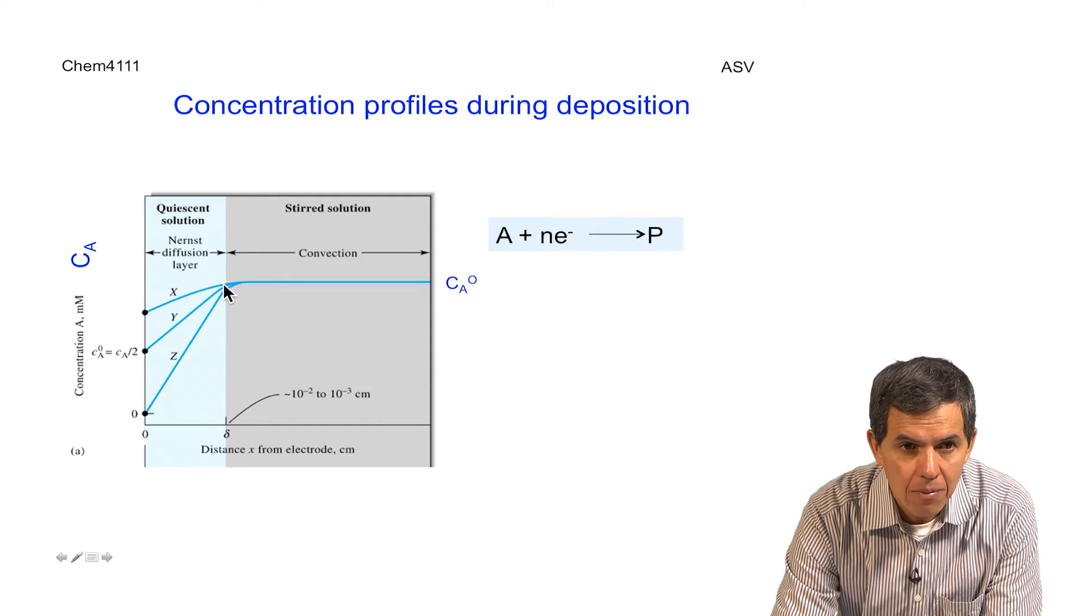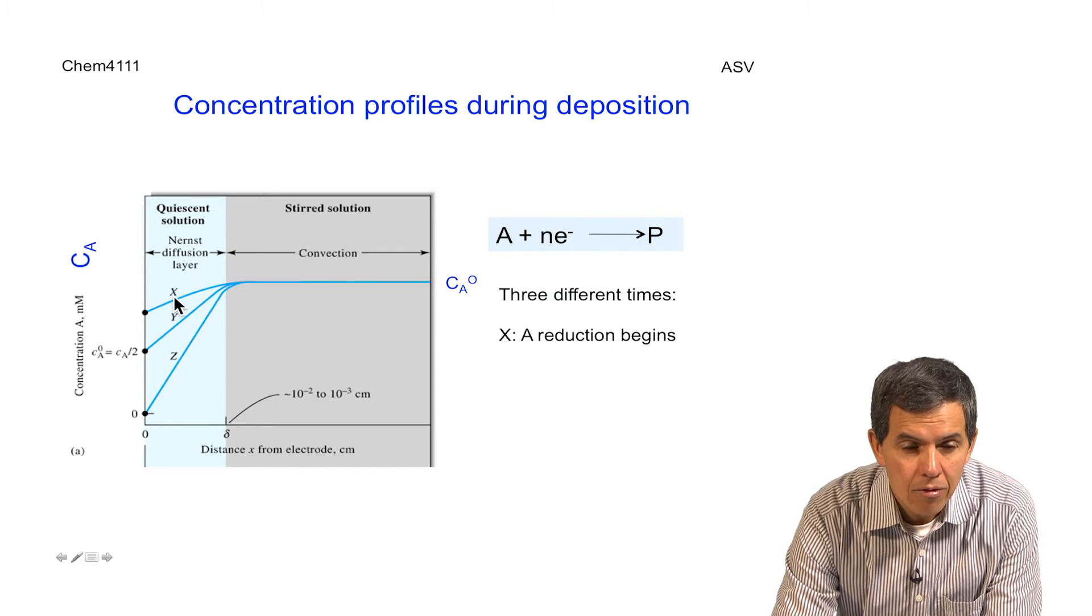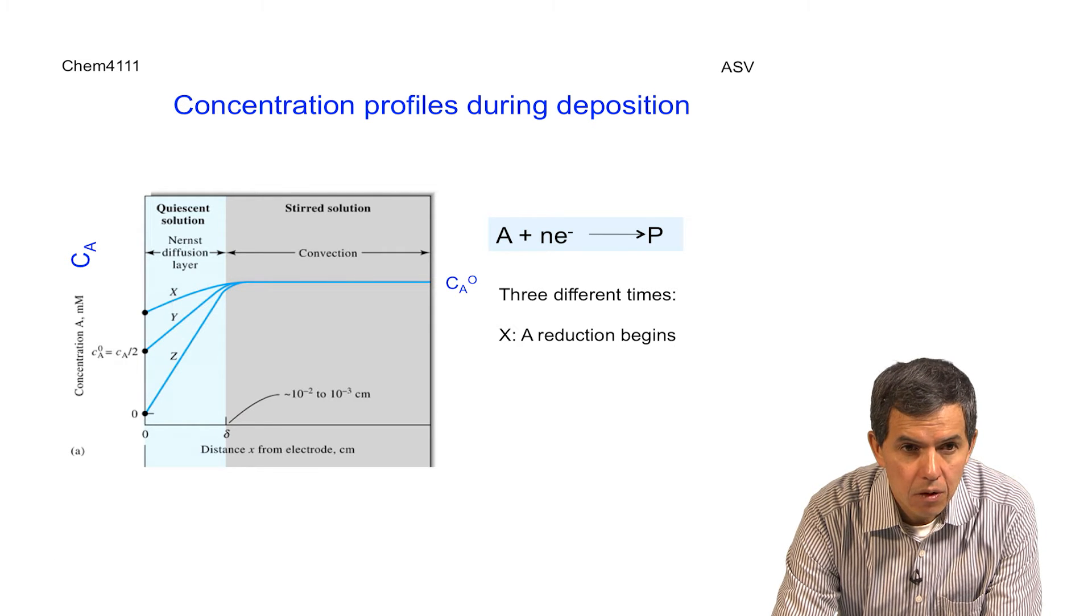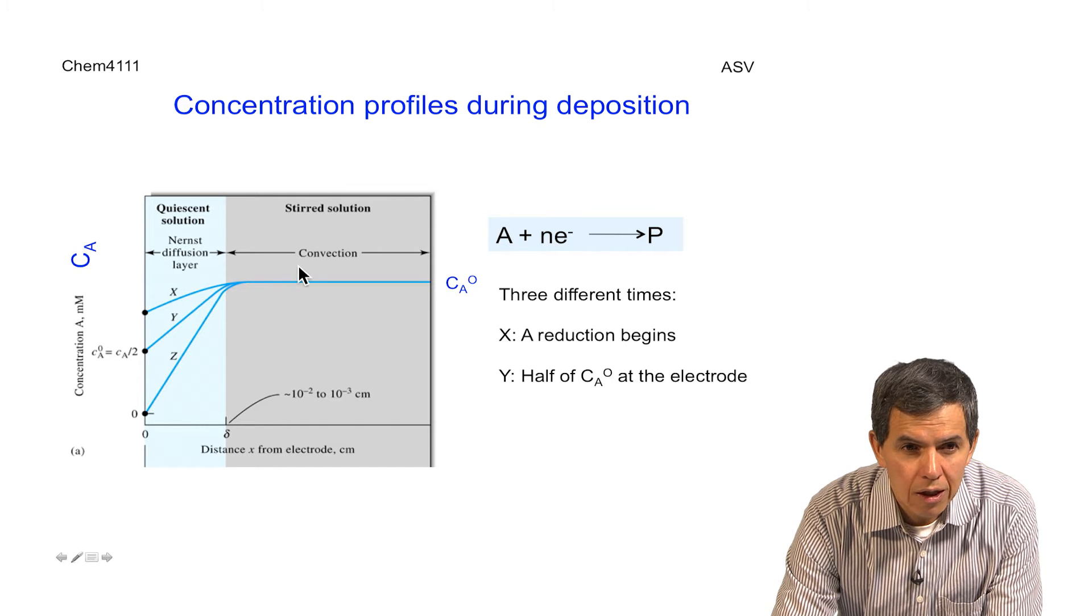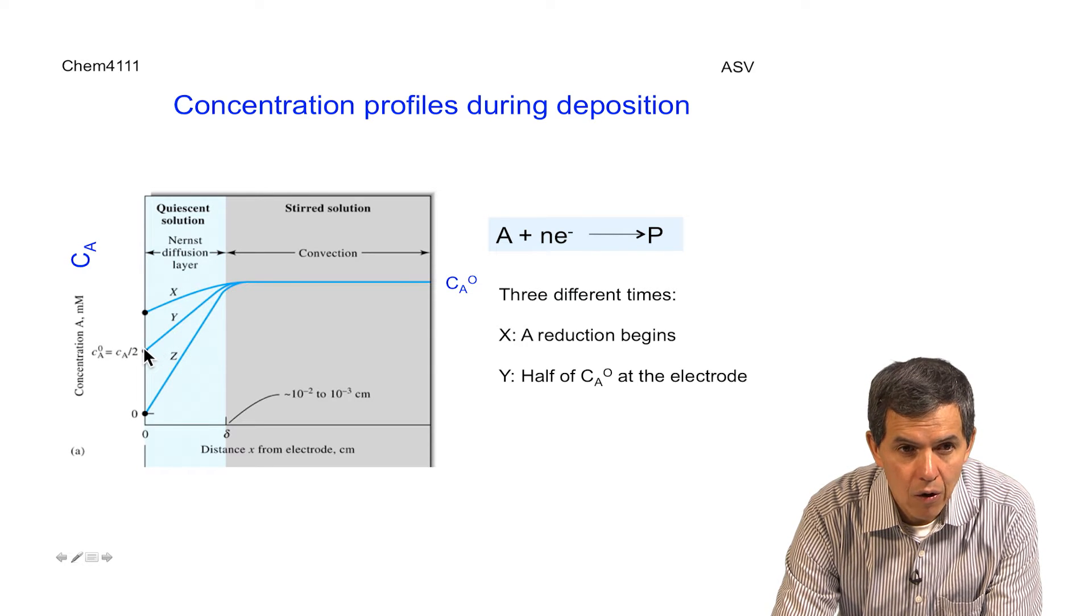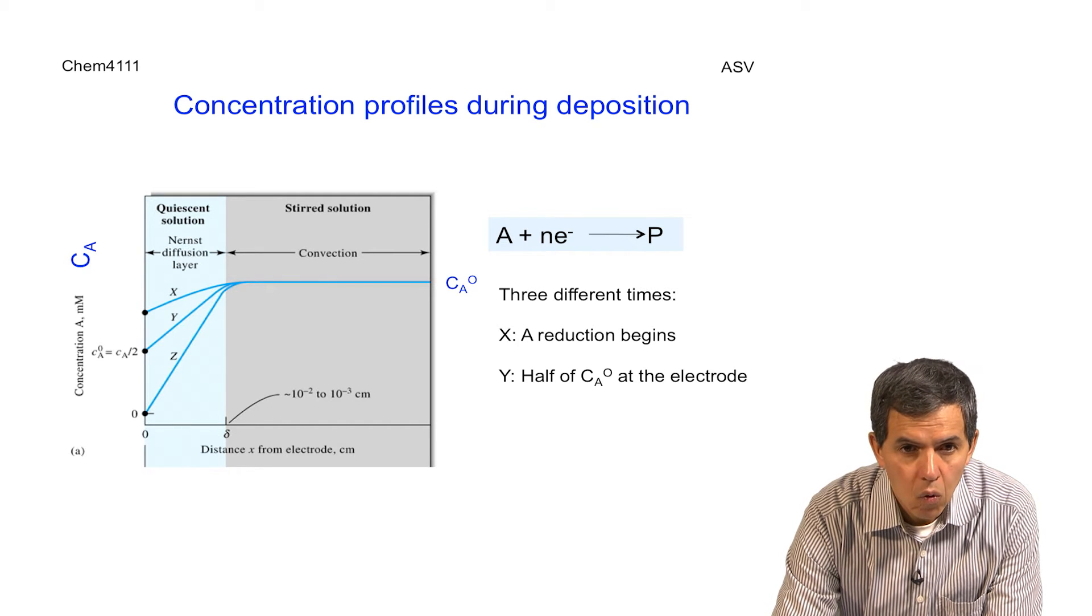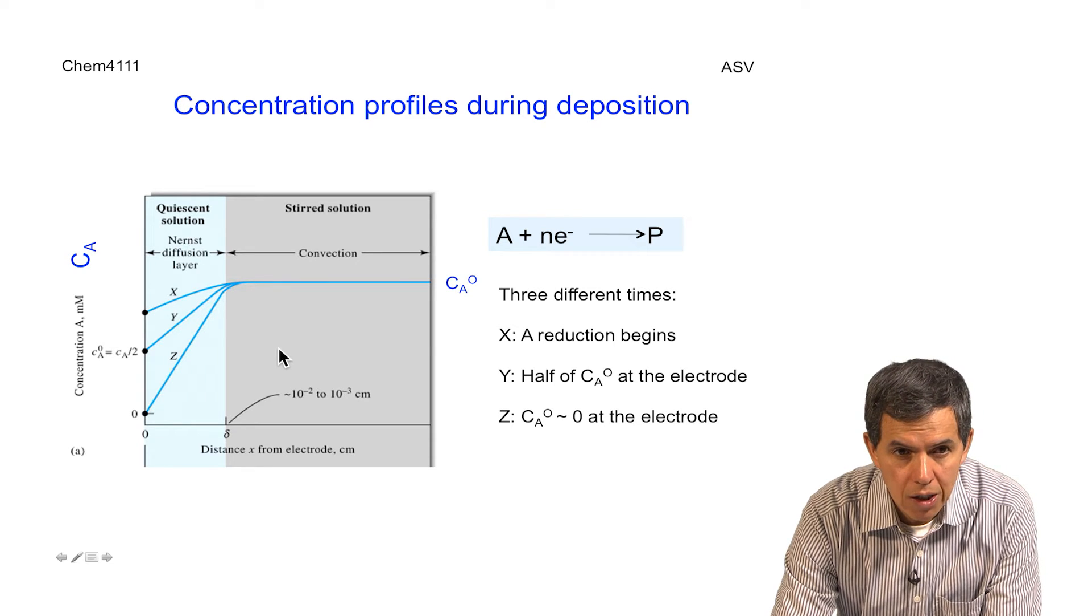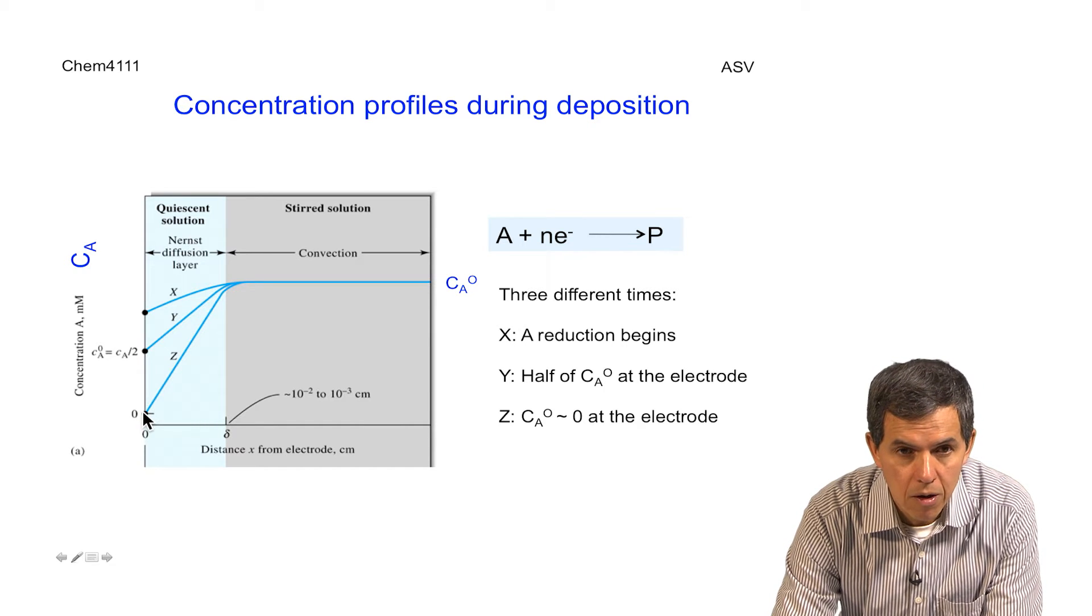However, at a given time, say for instance represented by X here, reduction will begin. As time continues, the reduction will continue so that the concentration of the oxidized species, Ca, is now half of what the initial concentration was in the bulk solution. And later on, when enough time has passed, the oxidized species are basically reduced totally to zero at the surface of the electrode and only the product is formed here.